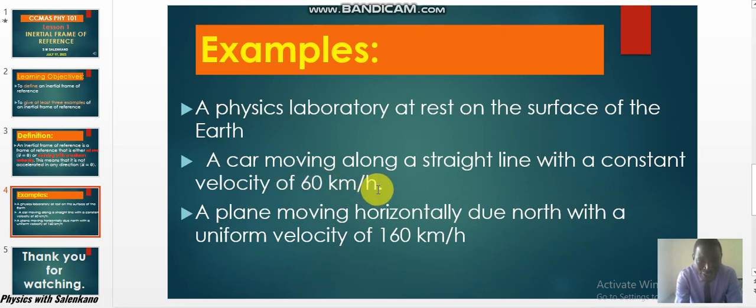A plane, you have an aeroplane moving horizontally due north with a uniform velocity of 160 kilometers per hour. Because the velocity is not changing, whether in magnitude or in direction, that makes it an inertial frame of reference.